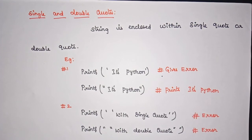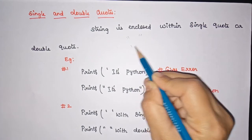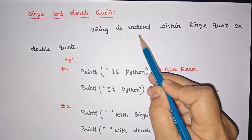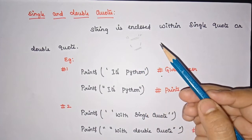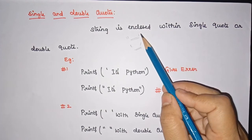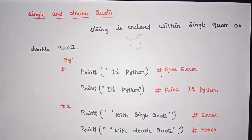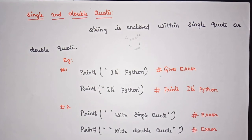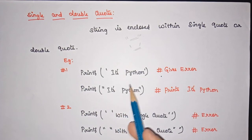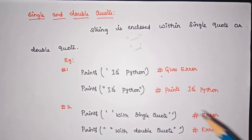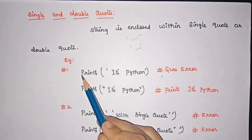Now, the usage of single quotes and double quotes inside the print function. If you want to print a string as output, you can specify it with either double quotes or single quotes — both are correct. However, the use of double quotes versus single quotes varies depending on the situation. Let us see some examples showing when to use single quotes, when to use double quotes, and when each will give an error.